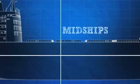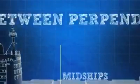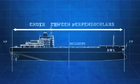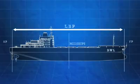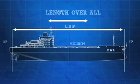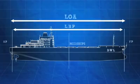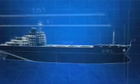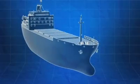Midships is the horizontal point halfway between the forward and aft perpendiculars, and the length between perpendiculars, or LBP, is the total horizontal distance between the forward and aft perpendiculars. Length overall, or LOA, is the total length of a ship at its longest point. Note that this may be a little longer than the LBP because a ship can extend slightly past the perpendiculars.